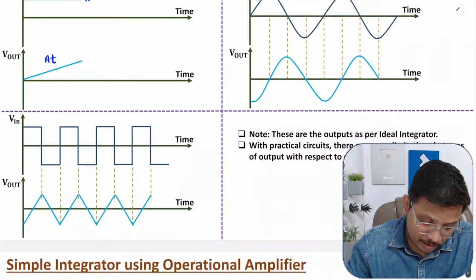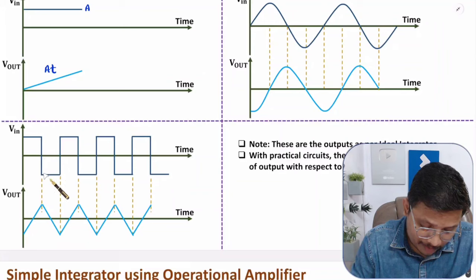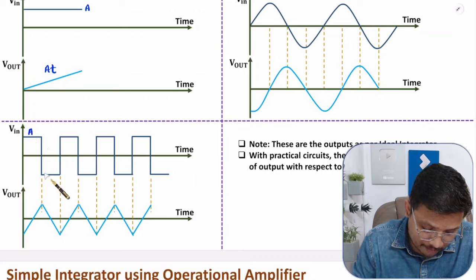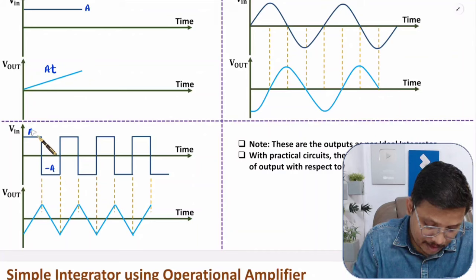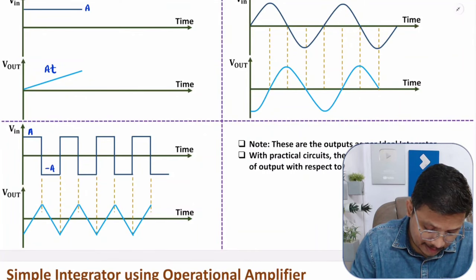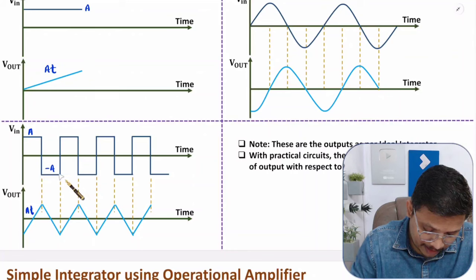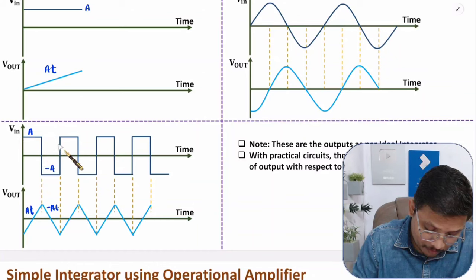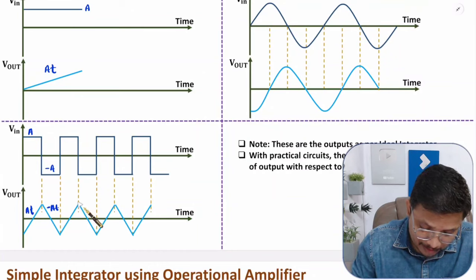Now, if you give a square wave as input, here you see that within one range of time, a positive A input is there, and within another range of time, a negative A input is there. If positive A input is there, then the output should be A into T — that is, a positive ramp signal. And if negative A input is there, then the output should be minus A into T — that is, a negative ramp. That is how a square wave gets converted into a triangular wave.